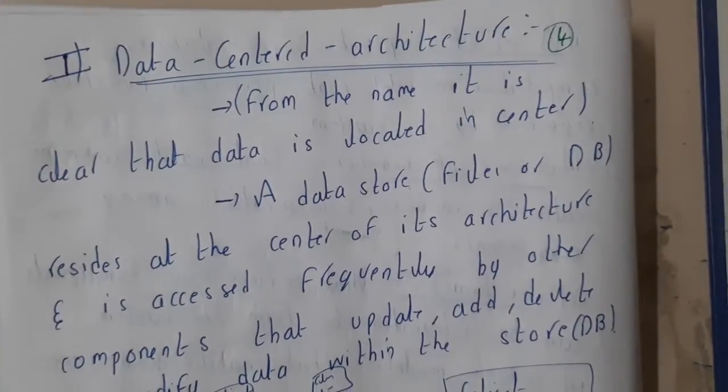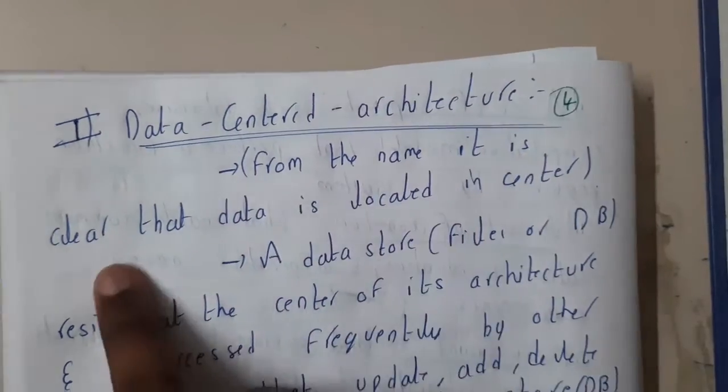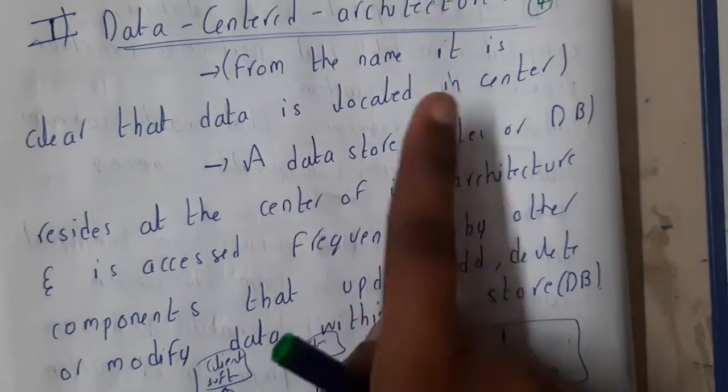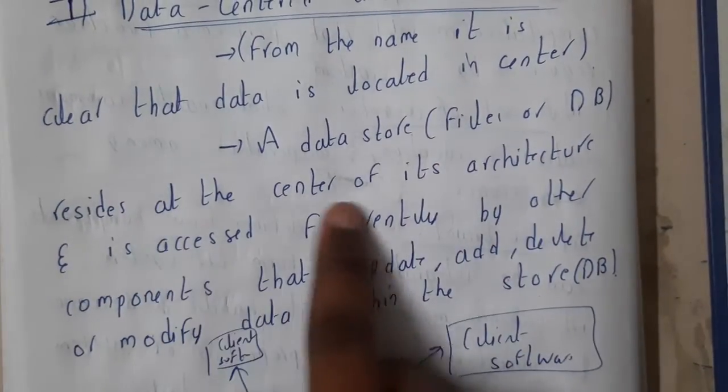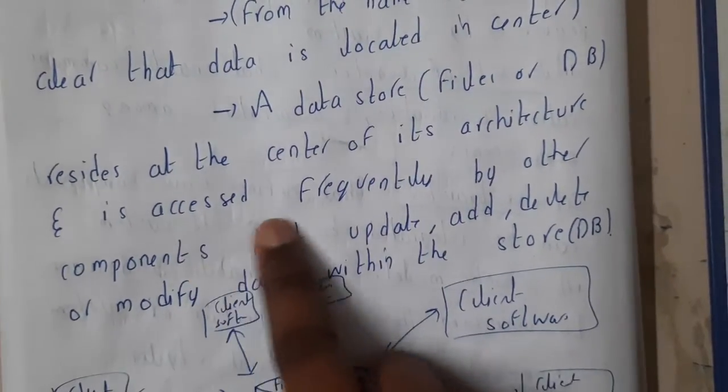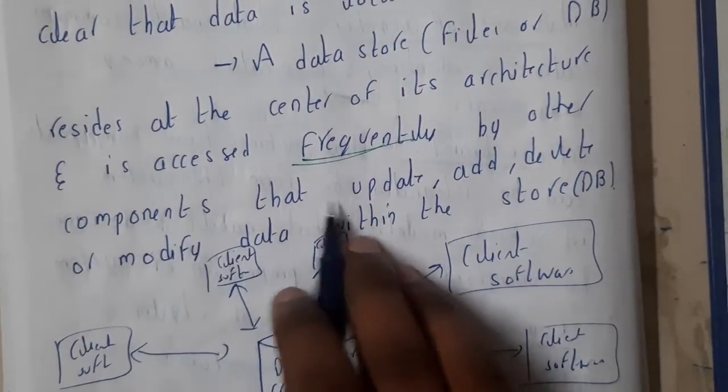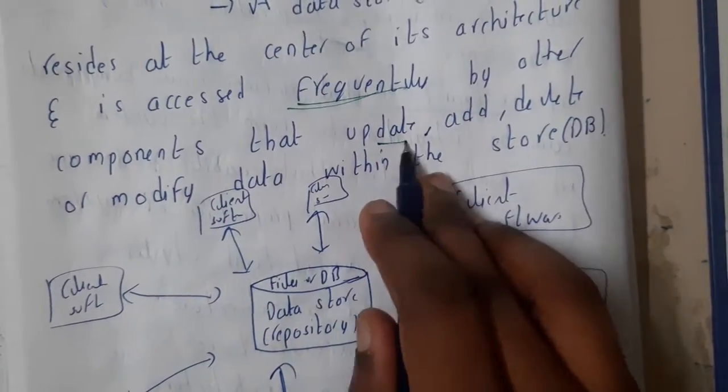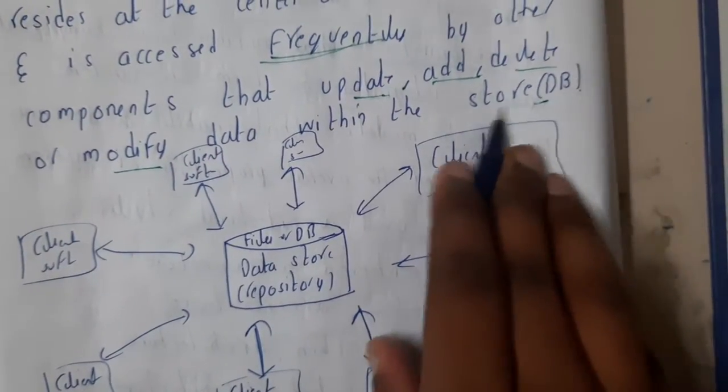Let us go through the theory. From the name, it is clear that the data is located in the center. A data store or file or database resides in the center of this architecture and is accessed frequently by other components. Remember that it is frequently accessed by other components that update, add, delete, or modify the data within the database. That is the reason why it is located in the center.